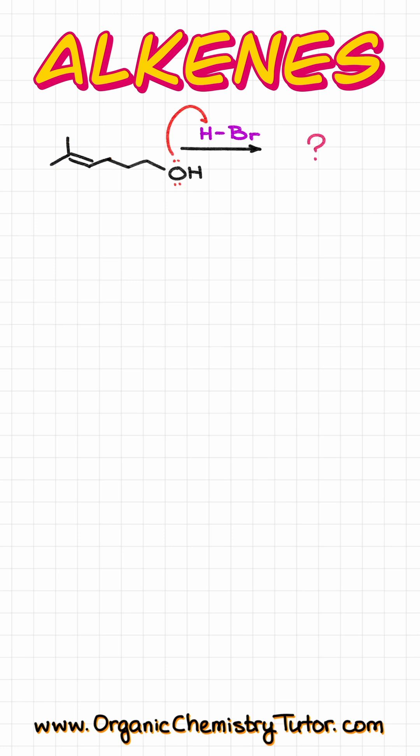If we protonate the OH group, like so, we are going to end up with the following intermediate. And while our H2O here is indeed a leaving group, this is a primary position, so we are not going to be able to form the carbocation, which means that this pathway is a dead end.